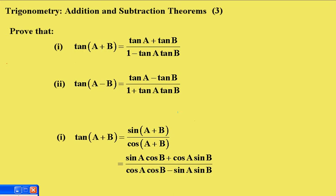Now we know that tan(A + B) is sin(A + B) over cos(A + B). So we just expand those expressions that we've learned in the previous two videos. Sin(A + B) is sin A cos B plus cos A sin B over cos A cos B minus sin A sin B.